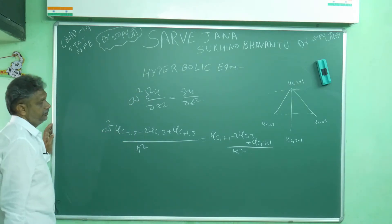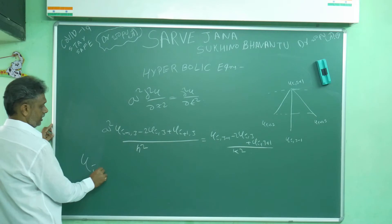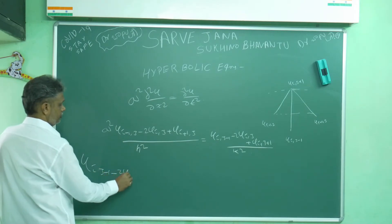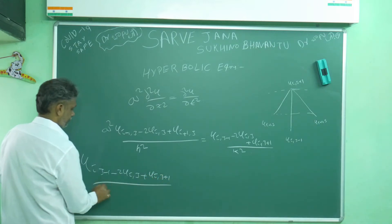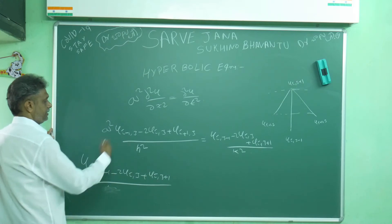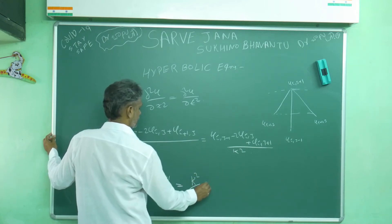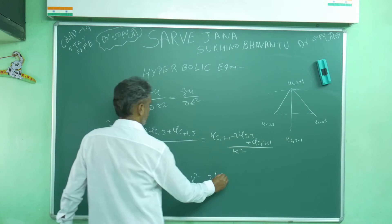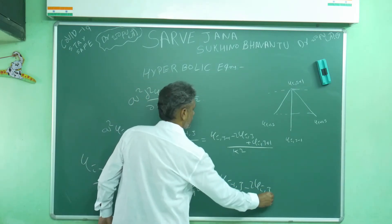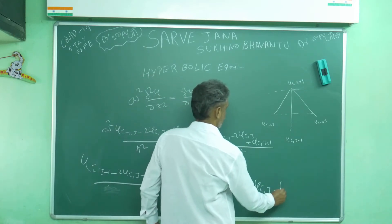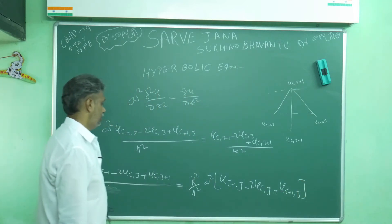I want to isolate u(i, j+1). Bringing everything over, we get: u(i,j-1) - 2u(i,j) + u(i,j+1) divided by k² equals a² times (u(i-1,j) - 2u(i,j) + u(i+1,j)) divided by h².